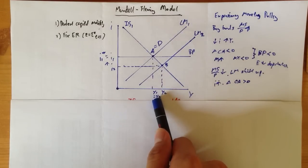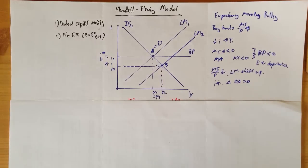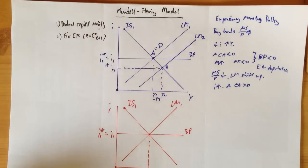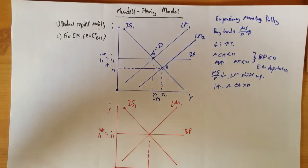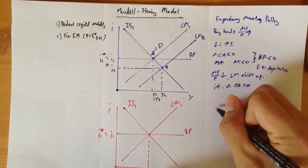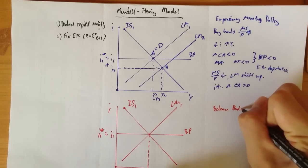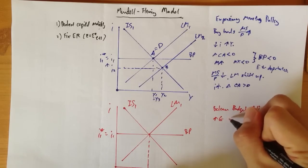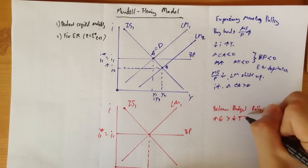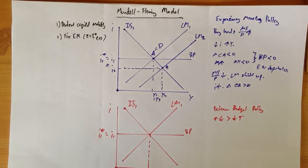Because the government is adopting a fixed exchange rate policy, we have our interest rate back at I1. Next, I'm going to talk about expansionary fiscal policy. The diagram is the same — your IS, LM, and BP with perfect capital mobility. The only difference is that instead of LM shifting, your IS will actually shift outward to IS2. Let's assume that the government is having a balanced budget policy, where the increase in government spending will exceed the decrease in taxes because of the multiplier for the IS function. So this increase in government spending will shift the IS outward to IS2.